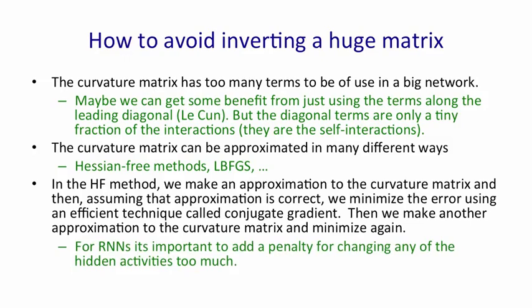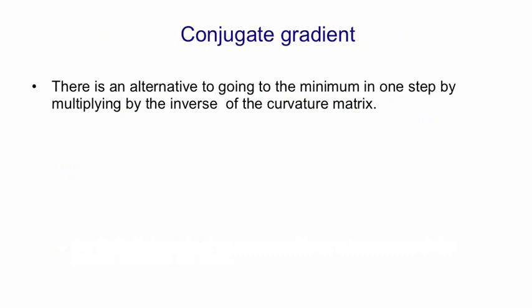It's also important in recurrent neural networks to add a penalty for changing any of the hidden activities too much. That will prevent us, for example, from changing a weight early on that causes huge effects later on in a sequence. We don't want to get effects that are too big, and if we look at the changes in the hidden activities, we can prevent that by penalizing those changes. If we put a quadratic penalty on those changes, we can combine that with the rest of the Hessian-free method.